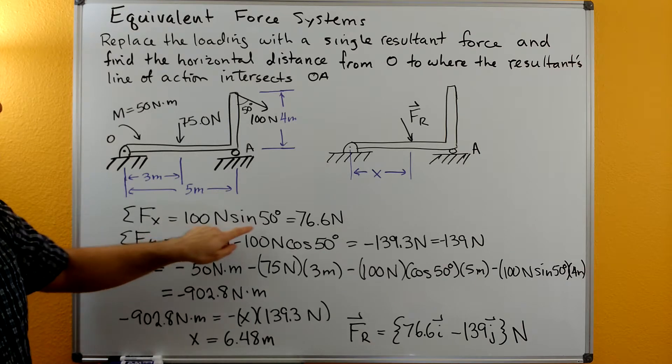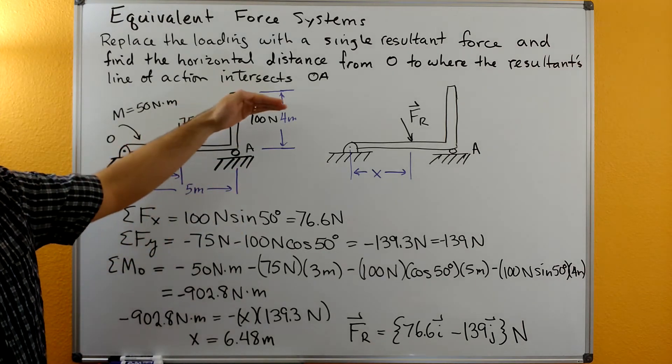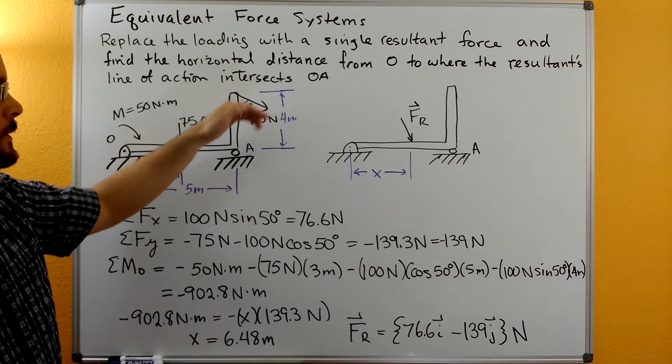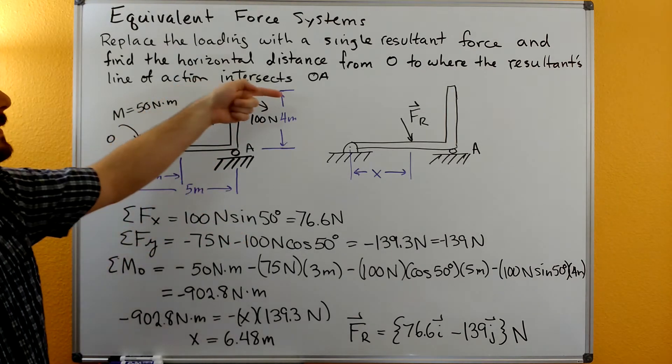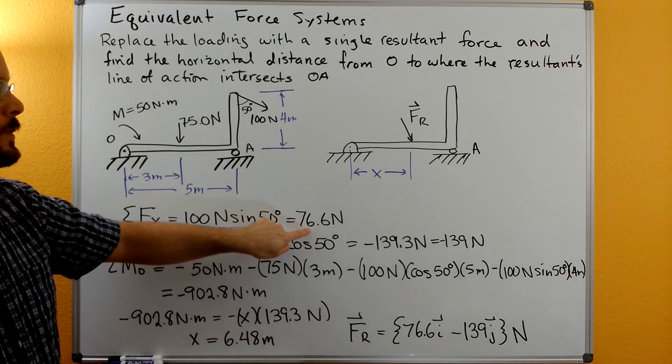That would be 100 Newtons times sine of 50. The X component here is the side that's opposite to the 50 degree angle. The X component going in the positive X direction, we get positive 76.6 Newtons.